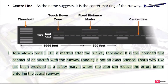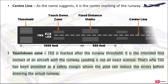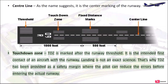Touchdown Zone (TDZ): TDZ is marked after the runway threshold. It is the intended first contact of an aircraft with the runway. Landing is not an exact science, which is why the TDZ has been provided as a safety margin where the pilot can reduce errors before entering the actual runway.